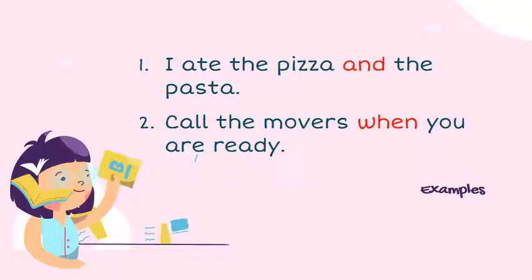This is conjunction in a sentence. Sentence number one: I had the pizza and the pasta. 'And' is the linking word between 'the pizza' and 'the pasta.' Sentence number two: Call the movers when you are ready. So 'when' links the two clauses. About further explanations about conjunction, we're going to discuss it on the next slide.